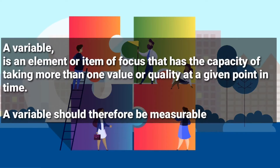In this video we are going to be looking at variables in research, and we shall start by defining what a variable is. As you hear, a variable is something that varies. A variable in research is an element or item of focus that has the capacity of taking more than one value or quality at a given point in time. A variable should therefore be measurable.